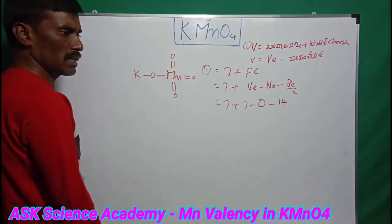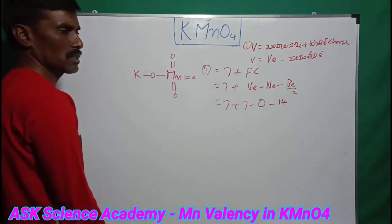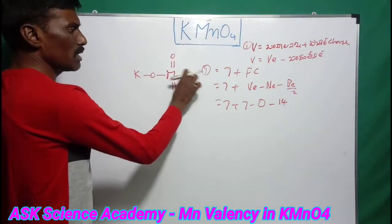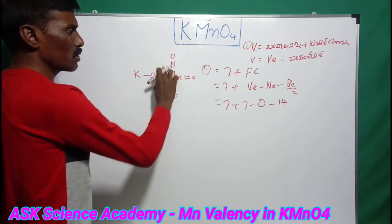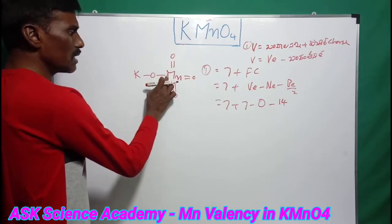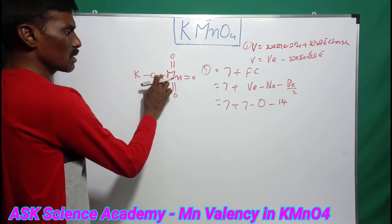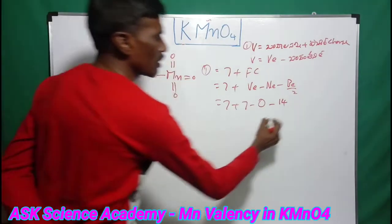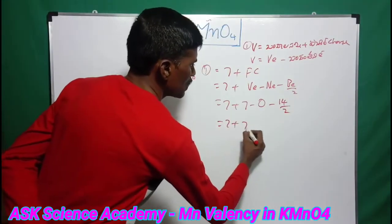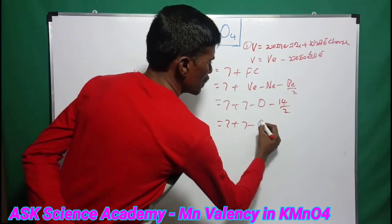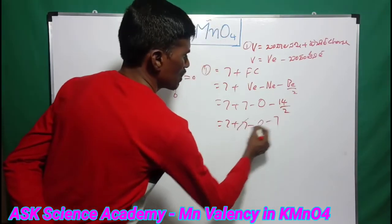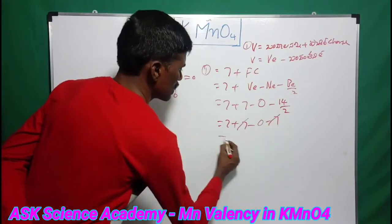Total bonded electrons: there are 4 bonds from manganese, so total bonded electrons equal 14. Applying the formula: formal charge equals 7 minus 0 minus 14 divided by 2, which is 7 minus 0 minus 7. The plus 7 and minus 7 cancel, giving 0.